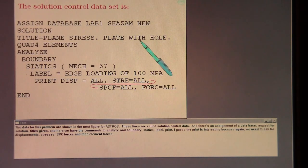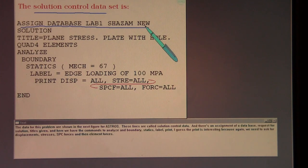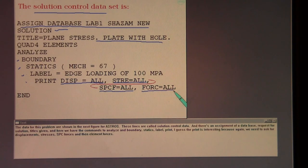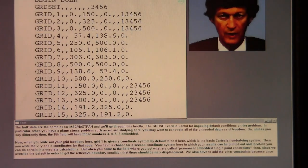The data for this problem are shown in the next figure for Astros. These lines are called solution control data. And there's an assignment of a database. Request for a solution. Titles given. And here we have the commands to analyze and boundary, statics, label, print. I guess the print is interesting because, again, we need to ask for displacements, stresses, SBC forces, and then element forces.